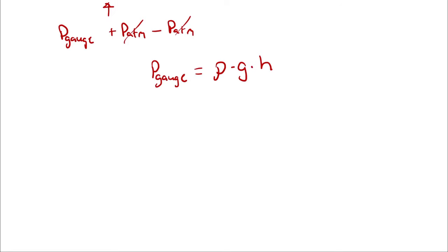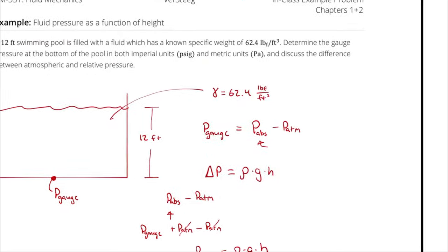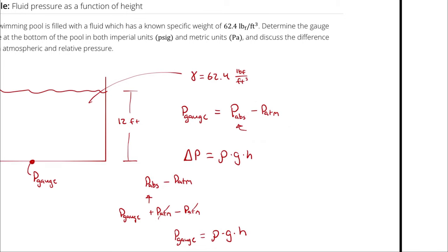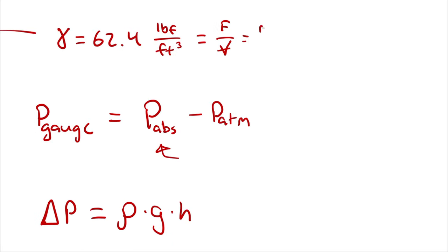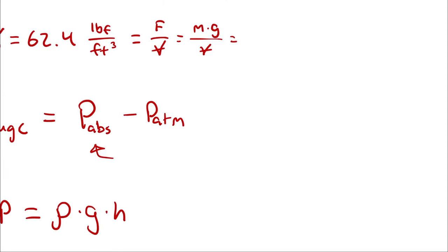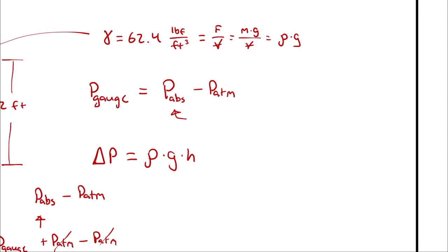Now I don't know the density, but I do know the specific weight. Remember that the specific weight is like density except with weight instead of mass. We can write that as the force of the weight divided by volume, which would be mass times gravity divided by volume, which would just be density times gravity. Therefore, the density of this fluid is going to be its specific weight divided by gravity.